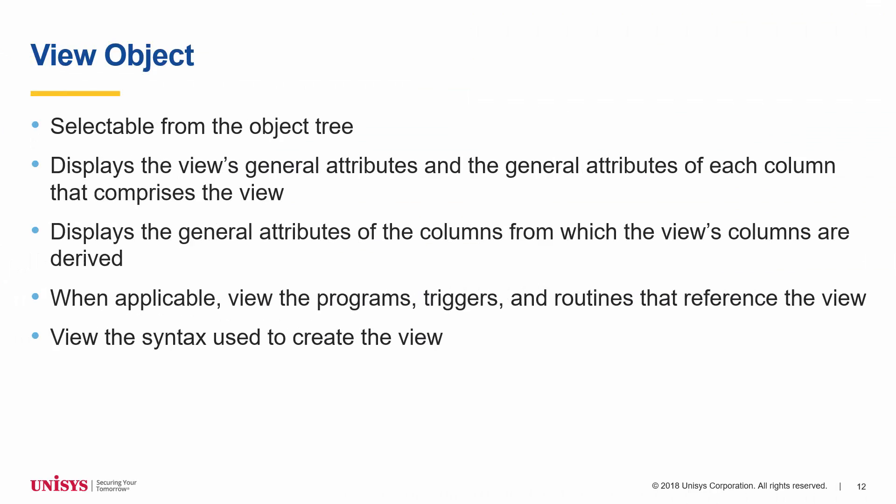On the UDS Object Explorer page, selecting a view object displays the view's information across two or three tabs in the object viewer. The first tab, General, displays general attributes, columns of the view, and columns from which the view's columns are derived. The second tab, Referenced In, displays the programs, triggers, and routines that reference the view. The third tab, Syntax, displays the syntax of the view.